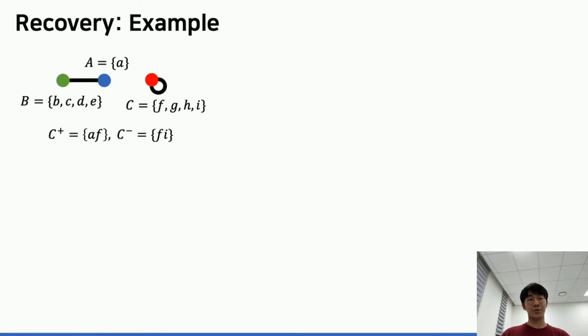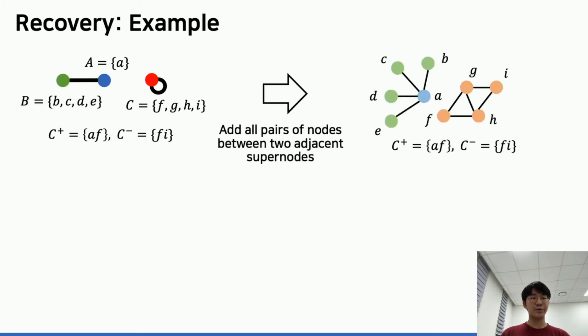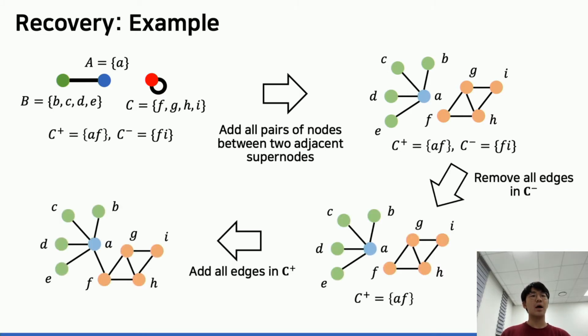While this procedure can summarize the graph, we call it lossless because we can fully recover the original graph from the compressed graphs. Recovery can be done by following the opposite direction. First, translate super edges into original edges by adding all possible edges between distinct nodes in two super nodes. Second, correct errors by deleting edges in C^- and adding edges in C^+.